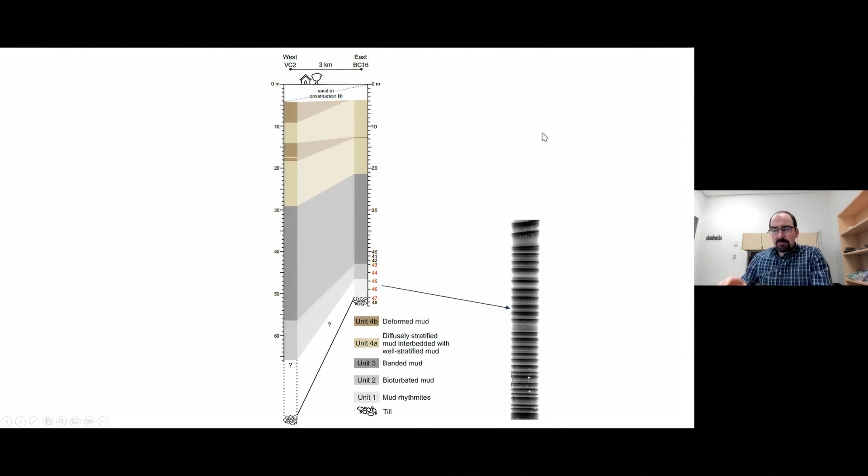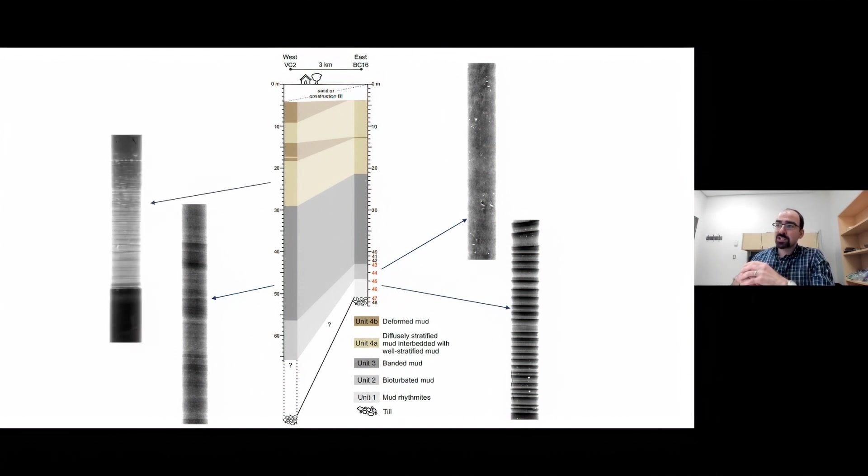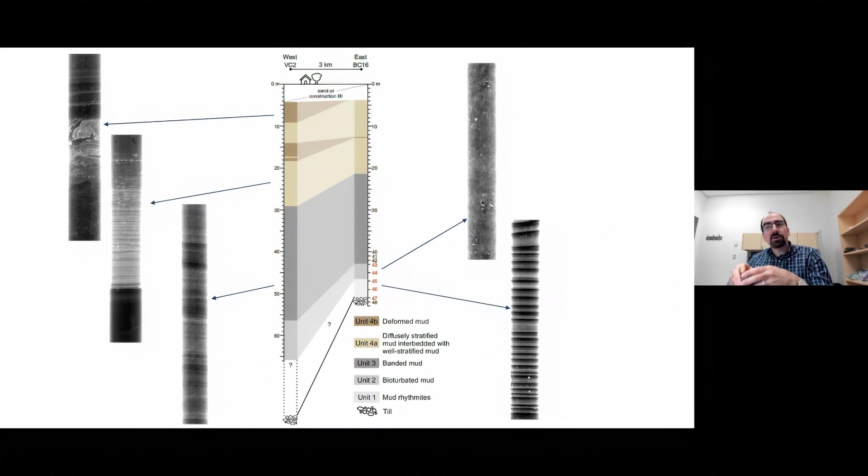The CT scan data set allowed for reconstruction of the depositional history of the stratigraphic succession. Beginning at the base, there's a thin few meter thick interval of mud rhythmites, parallel laminated, they look like classic varves. This unit abruptly transitions into a few meter thick interval of bioturbated mud. Notice from nicely stratified rhythmites to this bioturbated unit, which in turn abruptly transitions into this texturally diffuse banded mud unit. That in turn transitions into a unit consisting of well-developed parallel stratification intercalated with more diffusely stratified mud beds. In the upper part, we encounter beds of deformed mud.